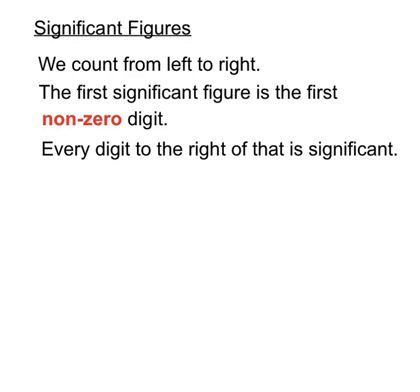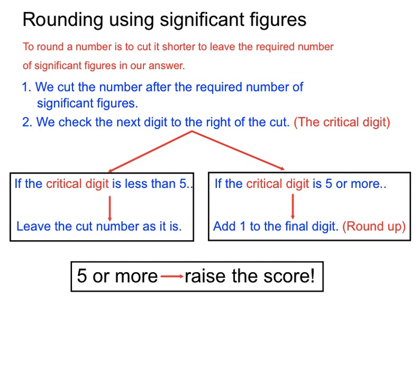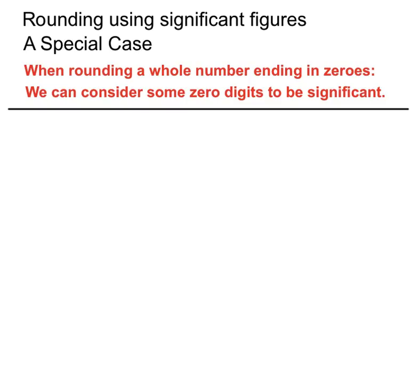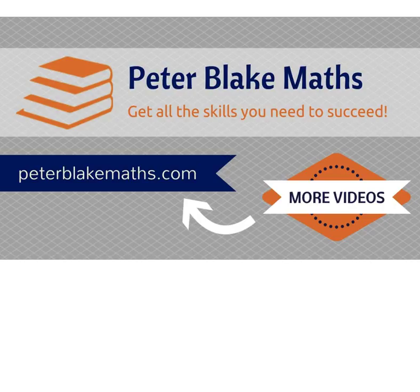Let's recap on significant figures. We count from left to right — the first significant figure is the first non-zero digit, and every other digit to the right of that first one can be significant, whether it's a zero or not. We use a similar rounding decision tree to rounding decimal places — we just start counting in a different spot. Five or more, raise the score. And that quirky special case: we're allowed to consider some zeros at the end of whole numbers to be significant depending on our purposes. I hope that helps with significant figures — watch the video again or visit PeterBlakeMaths.com. Thanks for listening.